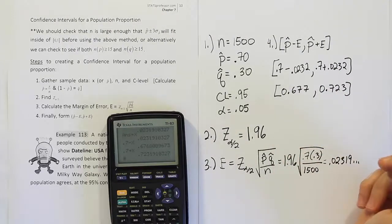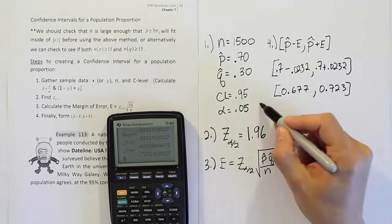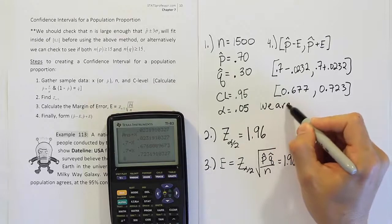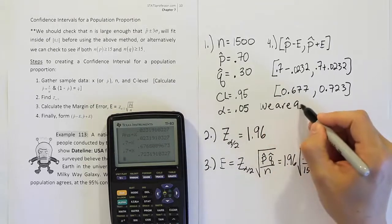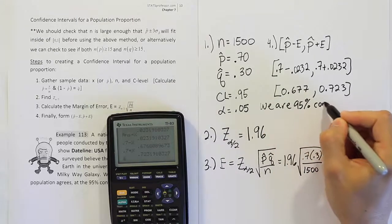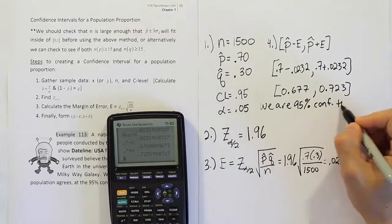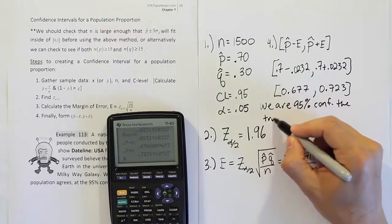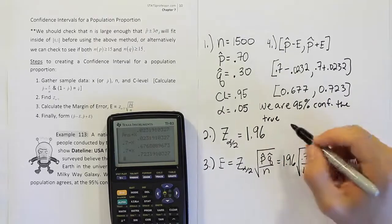Alright, now, we always finish this with the same classic statement. We are, in this case, 95% confident. The true, what's this problem about? It's about a proportion. True proportion.